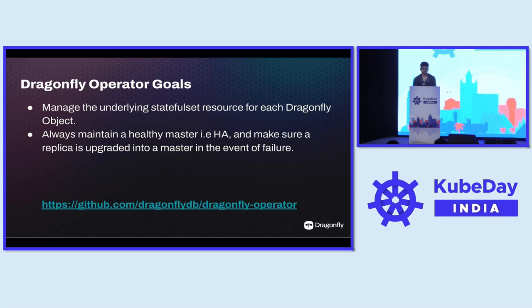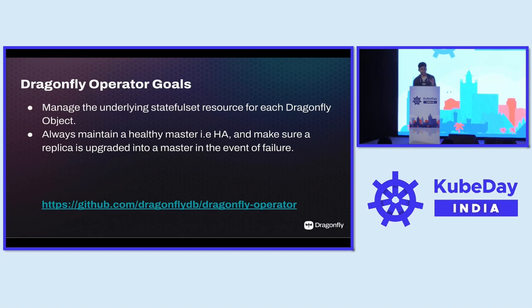Another goal is to always have a healthy master. You can't just have one Redis instance, because while the major use case is caching, a lot of applications use it for real-time data — gaming companies, session management, etc. Redis is a popular choice for faster retrieval of session data. This means you need a Redis instance always running, and during any failures, you should automatically fail over to another instance without manual intervention. You should have a replica, and if the master goes down, fall back to the replica with all the data.